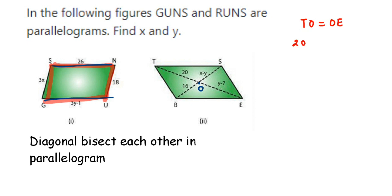TO value is 20, so 20 is equal to OE, which is y minus 7. Transpose minus 7 to the other side, it comes in addition. So 20 plus 7 is equal to y, which is 27. So y is equal to 27.